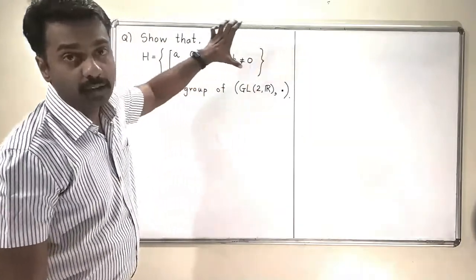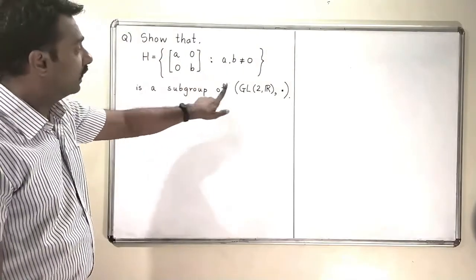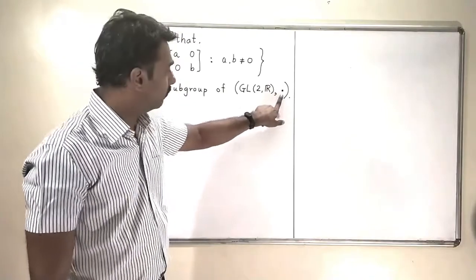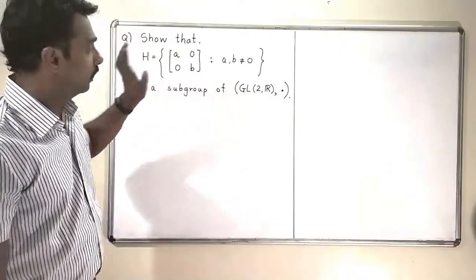We will collect a set of all diagonal matrices where the diagonal entries are not 0 in the set GL(2,R) with respect to the operation multiplication. R means A and B are real numbers.